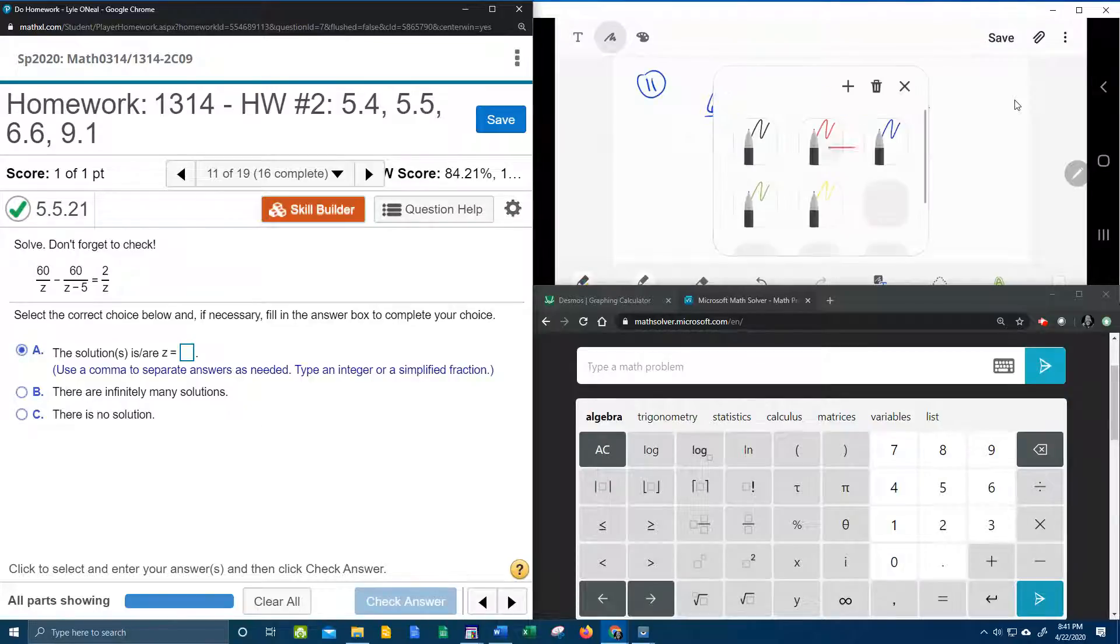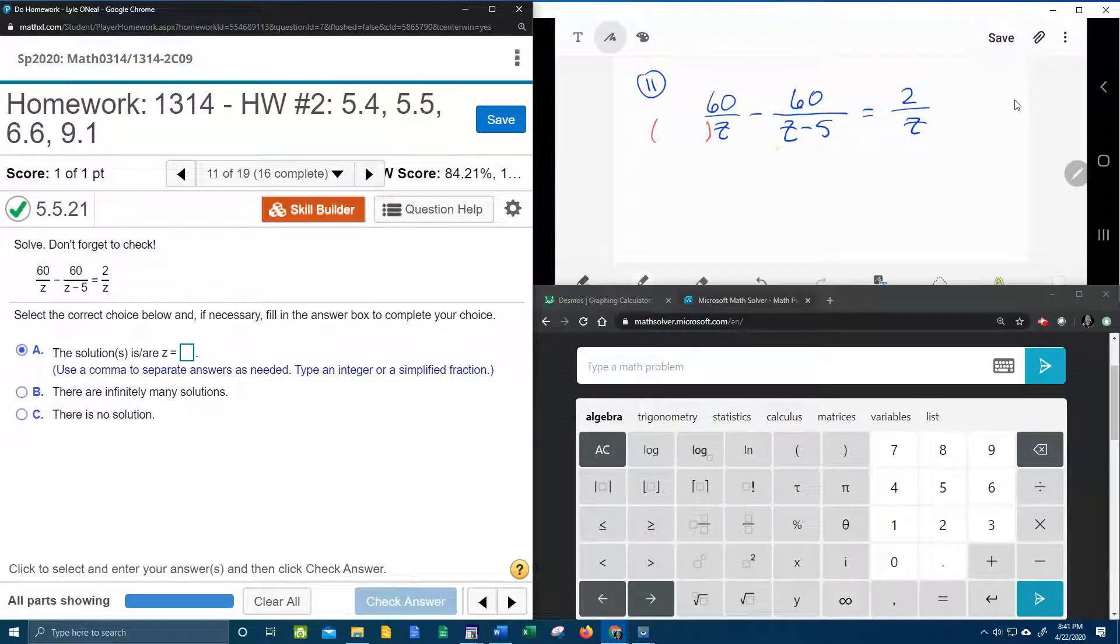And so what I notice is that the first denominator needs the z minus 5 that the second denominator has. So again, the first denominator needs the z minus 5, whatever I do to the bottom I have to do to the top.